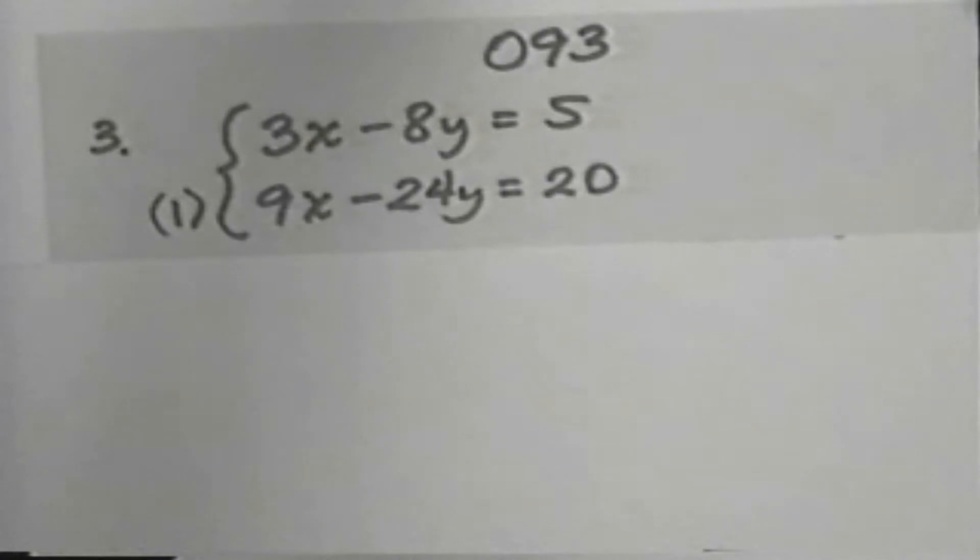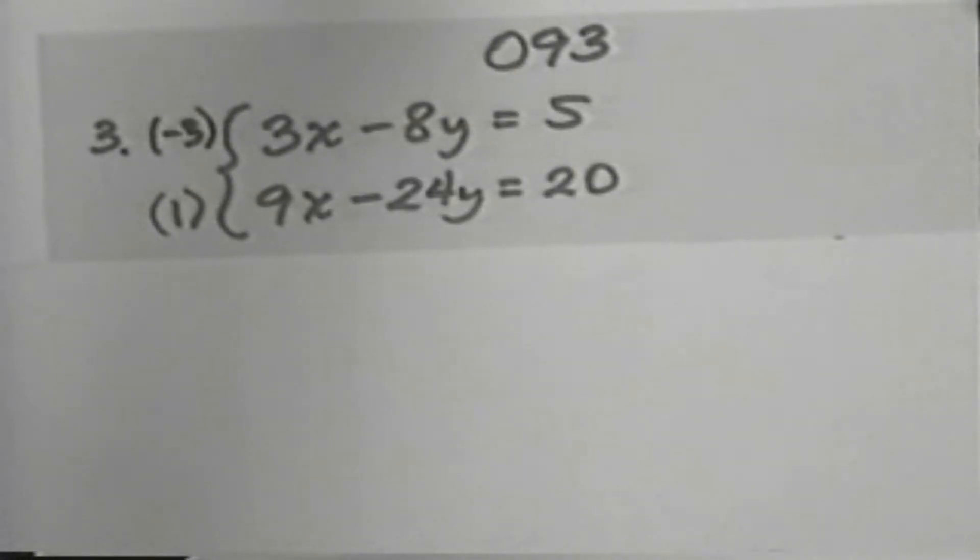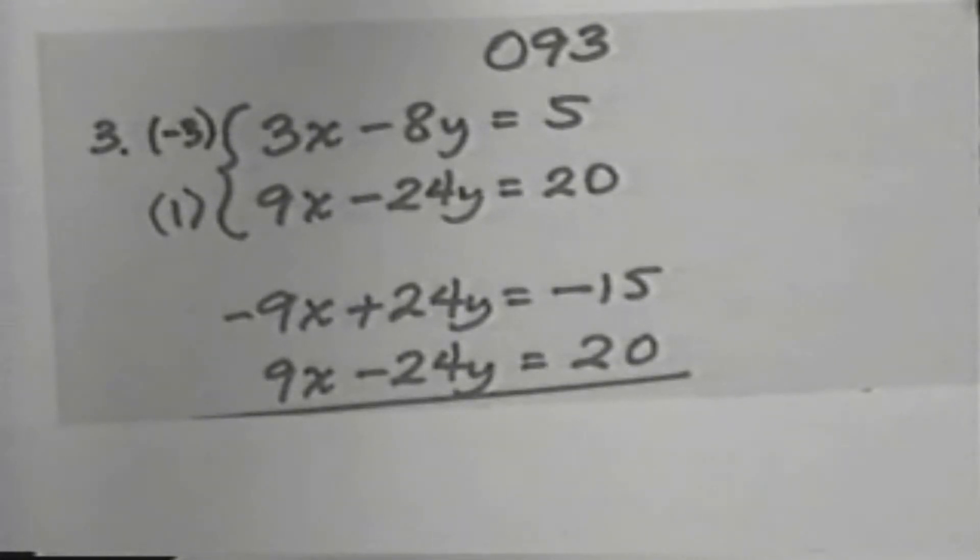That is, its multiplier will be 1. For the upper one, the first equation, I'll multiply by negative 3 to create a coefficient of negative 9 for the x. So, multiplying the first equation by negative 3 gives us negative 9x plus 24y equals negative 15. Then, one times the second equation gives 9x subtract 24y equals 20.